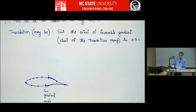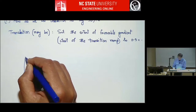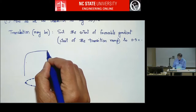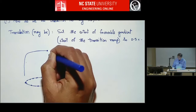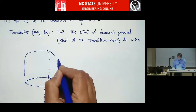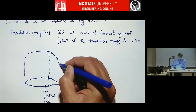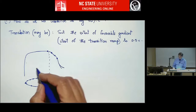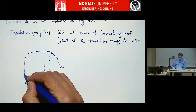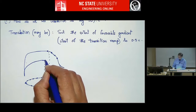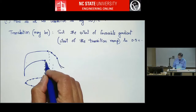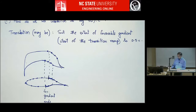So when you're at low drag conditions — like when you're operating within the drag bucket — the velocity distributions may look something like this. This is this point, and then you have a transition ramp that maybe goes to here, and then you have a recovery region. On the lower surface, you might have something like this, and then your transition ramp goes something like this, and then you have the recovery.